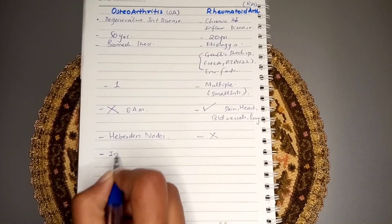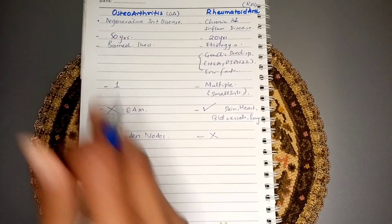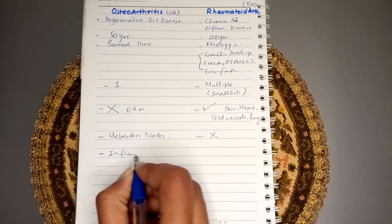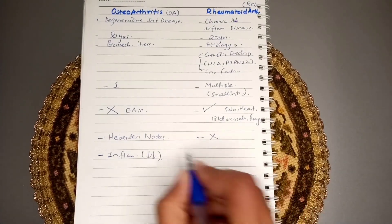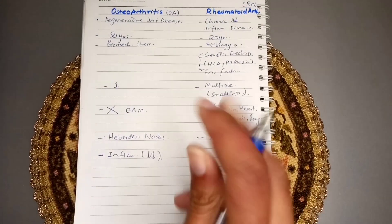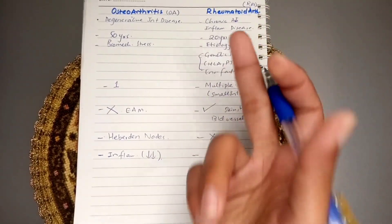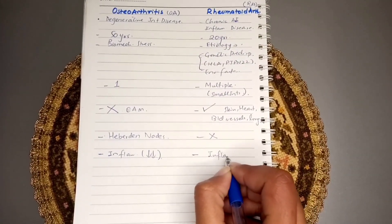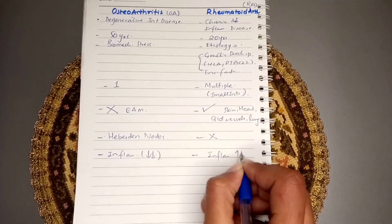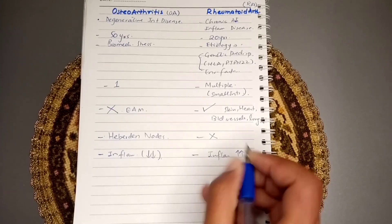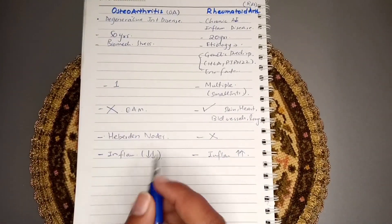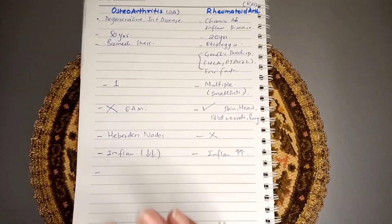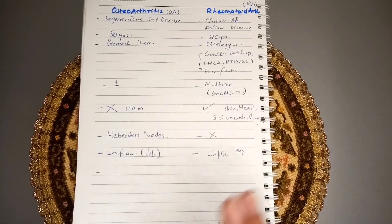The inflammation in osteoarthritis is minimal, while in rheumatoid arthritis the inflammation is intense. In osteoarthritis it is mild, and there is a local production of cytokines responsible for disease progression.